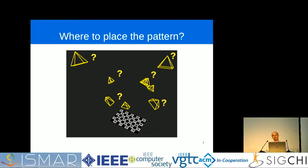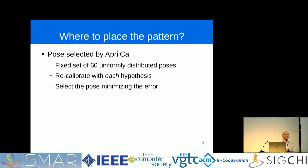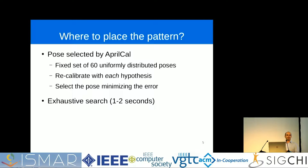There is related work which actually tackles this question already, and this is AprilCal by Richardson et al. What you see here is the method in action. The wireframe display is the target pose, and the user is supposed to match it with the real target. They have a fixed set of 60 uniformly distributed poses in view space, and for each pose they generate a synthetic measurement, add it to the calibration set, and recalibrate, then guide the user to the pose with minimal error. This is essentially an exhaustive search using 60 sampling points, and because calibration has to be performed 60 times, it takes between one and two seconds to generate a new pose suggestion.